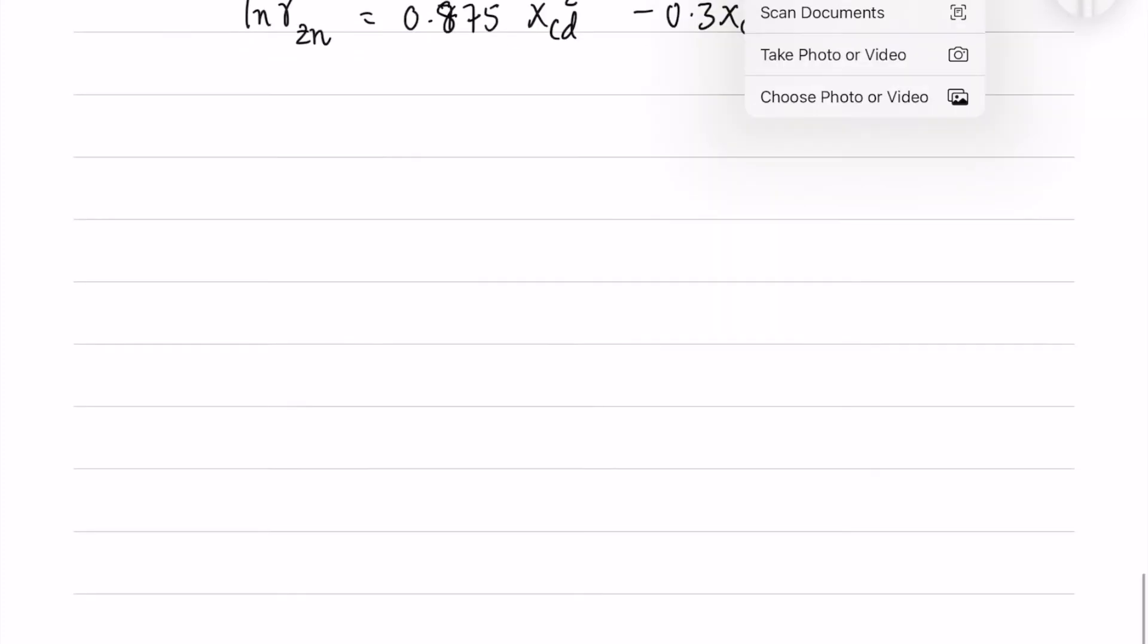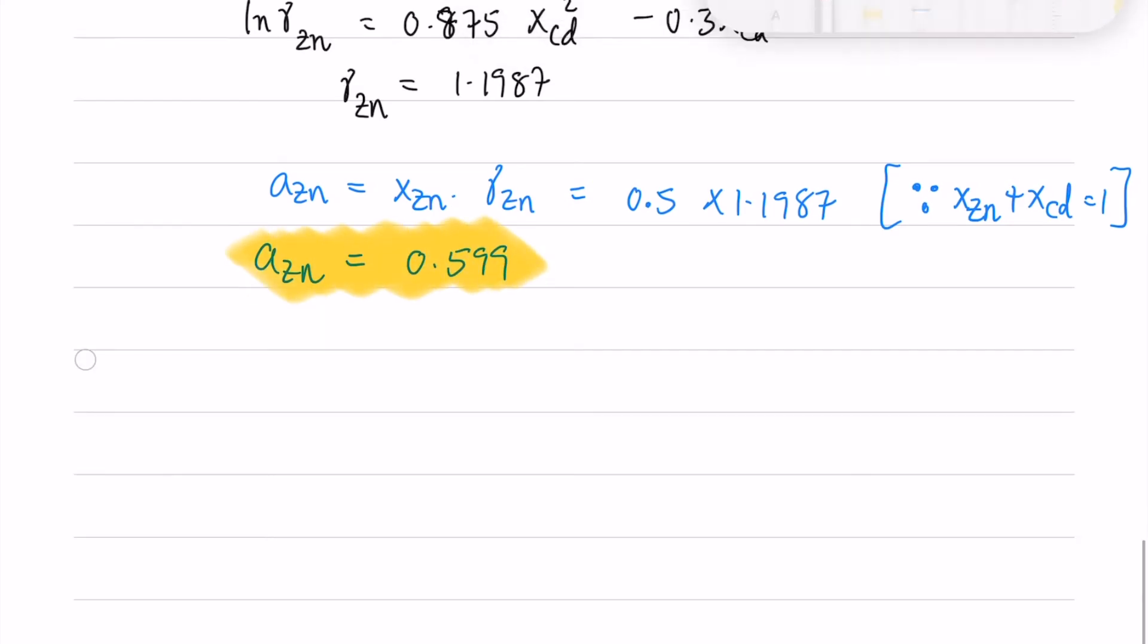We have the formula for the activity coefficient. From the activity coefficient we can get the activity and the activity of zinc is 0.599. So we will put this in the formula.